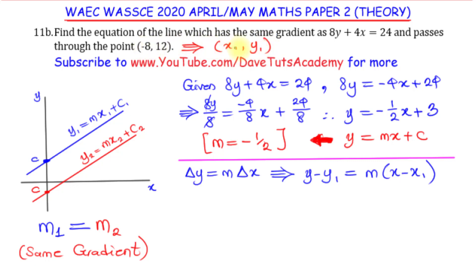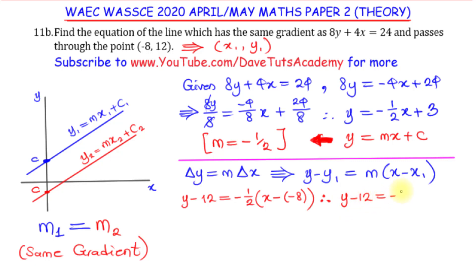Plugging in the values, we have y minus 12 equals minus 1 over 2 multiplied by x minus x1, where x1 is minus 8. So we write x minus negative 8, and since we are subtracting a negative number, that becomes x plus 8. Therefore, y minus 12 equals minus 1 over 2 multiplied by x plus 8.